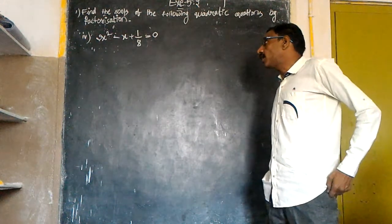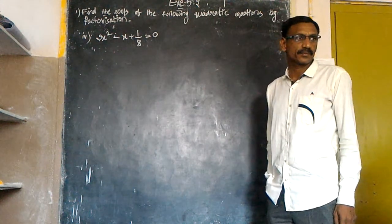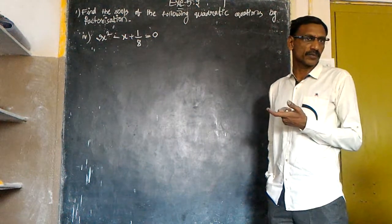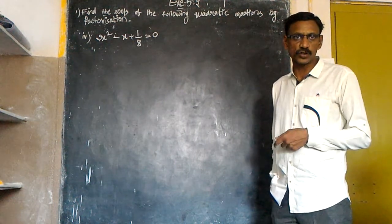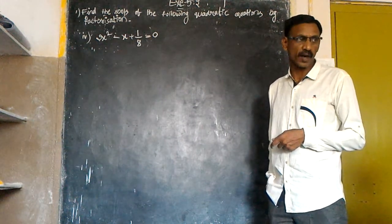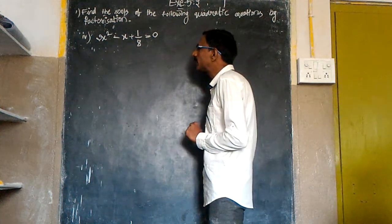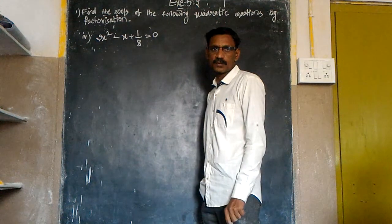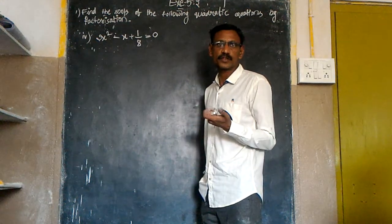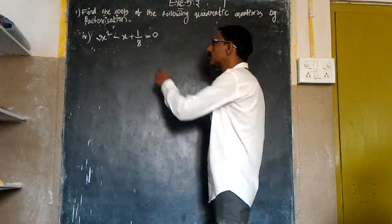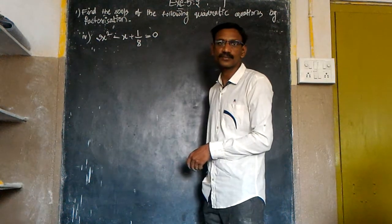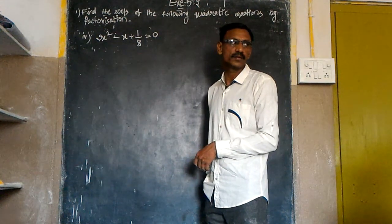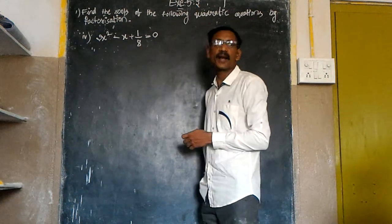As usual you are taking splitting of middle term to find the zeros of the quadratic polynomial or quadratic equation. See here, we have a denominator. You are unable to split the middle term because here you have fraction.